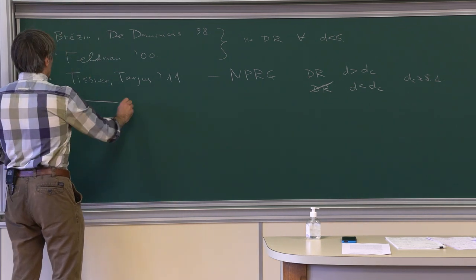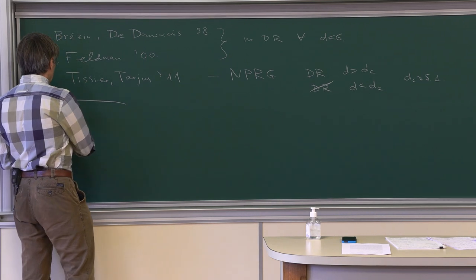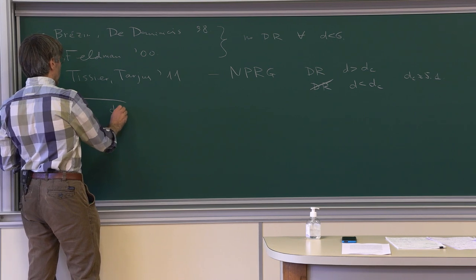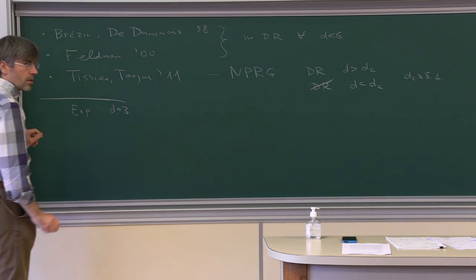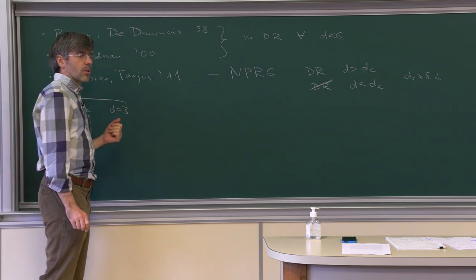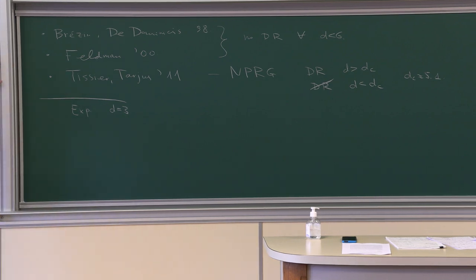This was on the purely theoretical side. In the meantime, there were also interesting developments on the experimental side and on the numerical side. One can study this random field Ising model in d equal 3 and d equal 2 dimensions. These experiments confirmed that the phase transition is continuous, and they determined the critical exponents with some accuracy, showing they are definitely different from the usual Ising model critical exponents.